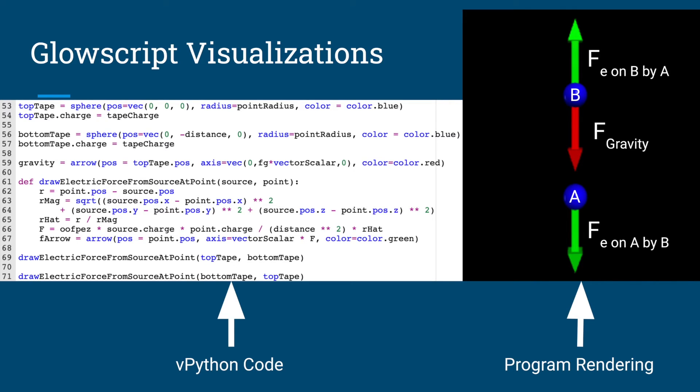Finally, let's leverage GlowScript's 3D modeling capabilities to render a simulation of our physical model from earlier. Here, the green vectors on the points represent the electric force due to the other point, and the red vector represents the force of gravity. We can reduce the amount of code written during this process by defining vector computation and rendering under a function, so it can be performed multiple times.